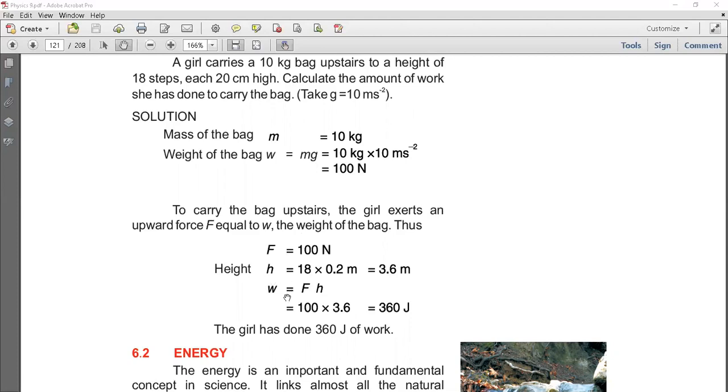Now using the work formula W = F × S, force multiplied by distance. Force is 100 newton and we multiply it by 3.6, it will be 360 joules. The girl has done 360 J of work.